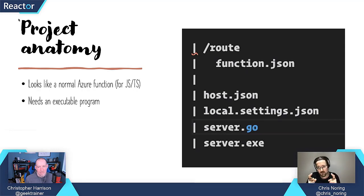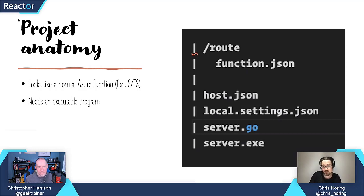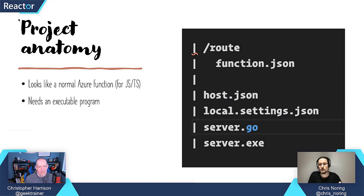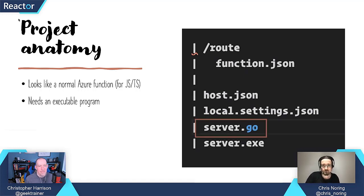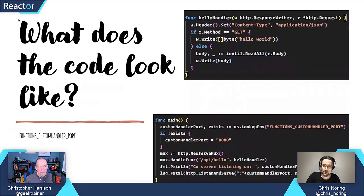And then you have the server.go, which is our web app. If you're on Windows and you compile the server.go file, you're going to end up with a server.exe. But if you're on Linux, it's just going to be called server. So to emphasize: you have a code file, and you will definitely need an executable, which is produced once you compile. So server.go becomes server.exe.